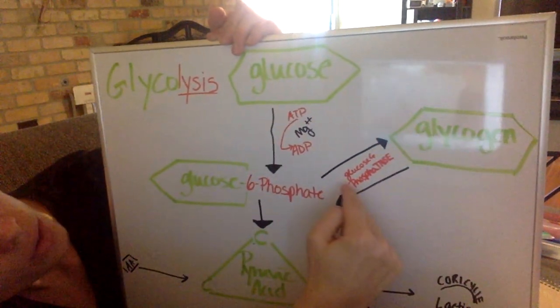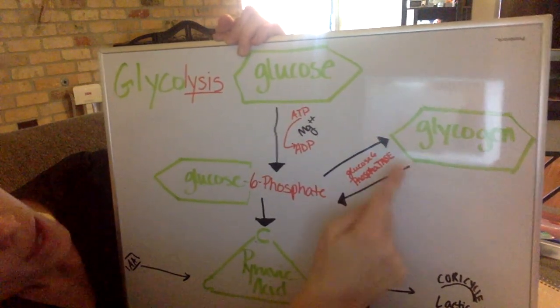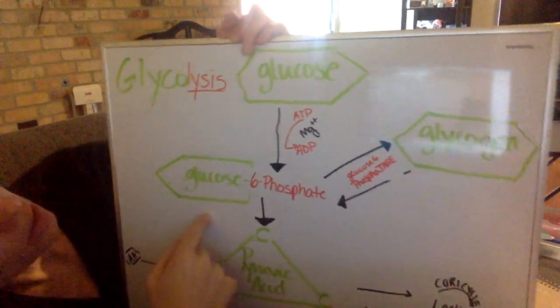then our glycogen is going to use glucose 6-phosphatase—ASE being that enzyme suffix. That's also going to yield glucose 6-phosphate.